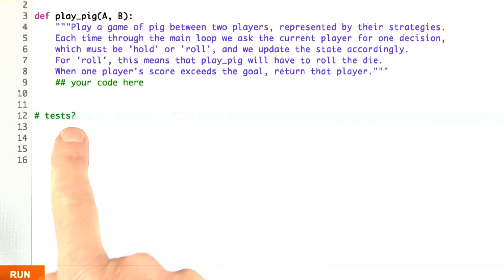One thing I note is I don't have any tests here, and the reason is it's hard to test this. It's hard to write a deterministic test because part of playing the game is rolling the die, and that won't be the same every time. And we'll talk in a bit about how to test programs like this.